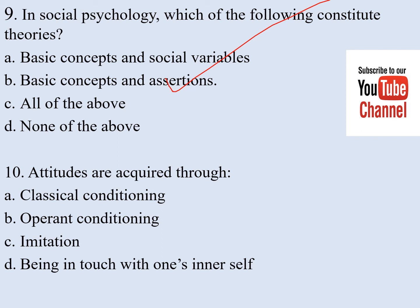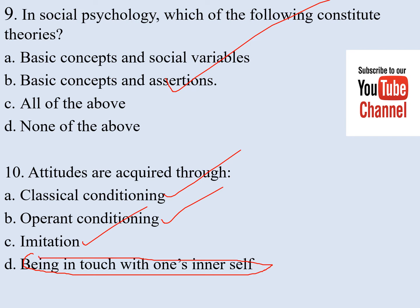Number ten. Attitudes are acquired through: a) classical conditioning, b) operant conditioning, c) imitation, d) being in touch with one's inner self. This question was a bit tricky. When you look at all the components, you realize that operant conditioning, classical conditioning, and imitation are all correct answers. So D was supposed to be all of the above. Anyone who chose A, B, or C would have been marked as correct.